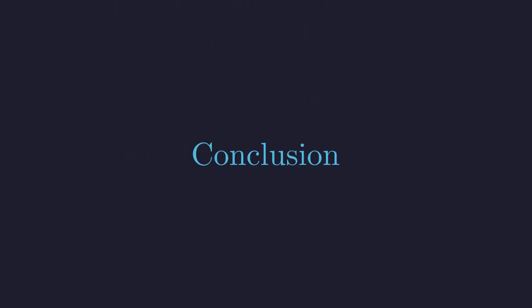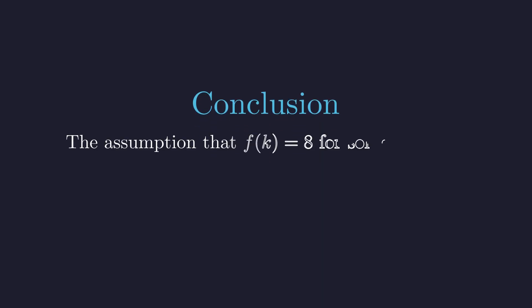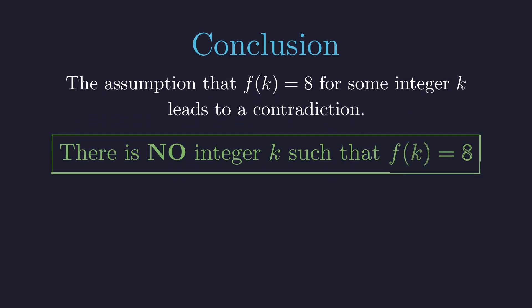So let's step back and see what we've shown. We assumed there was some integer k where f of k equals 8. And that assumption led us to conclude that an integer equals 1 third, which is absurd. Therefore, we have definitively proven that there is no integer k such that f of k equals 8. The contradiction forced by integer constraints makes this impossible.